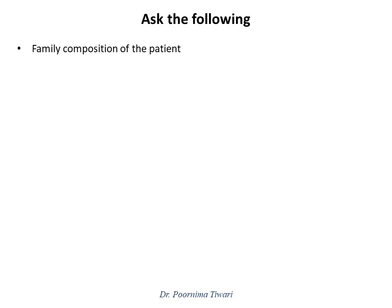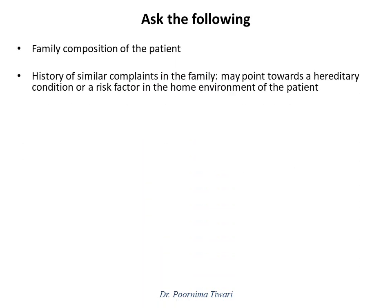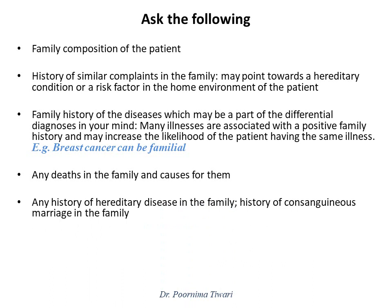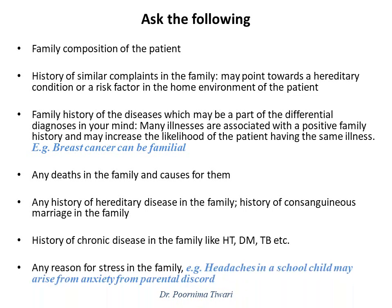Under family history, ask about the family composition of the patient. A history of similar complaints in family members may point towards a hereditary origin of the condition or a risk factor present in the home environment. Ask about family history of diseases that come to mind as part of your differential diagnosis, because the presence of any one of these increases the likelihood of the same disease being present in the patient. Ask about any deaths in the family and their causes, hereditary diseases, consanguineous marriage, and chronic diseases like hypertension, diabetes mellitus, or tuberculosis. Also try to assess any reason for stress in the family — for example, headaches in a school child may actually arise from anxiety due to parental discord.